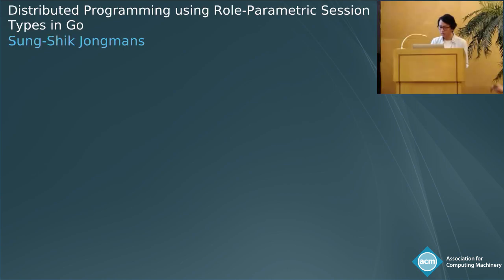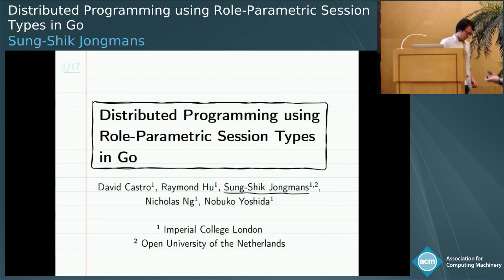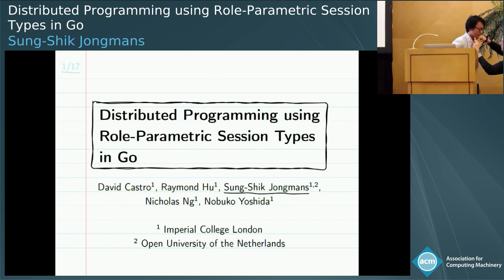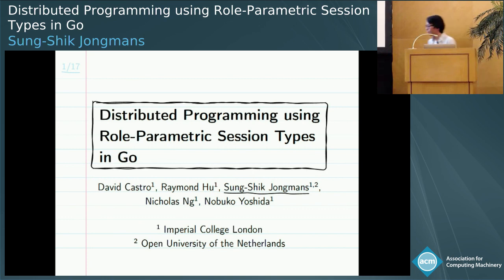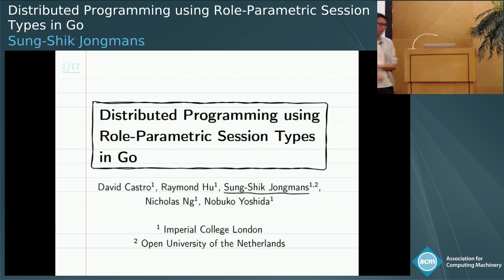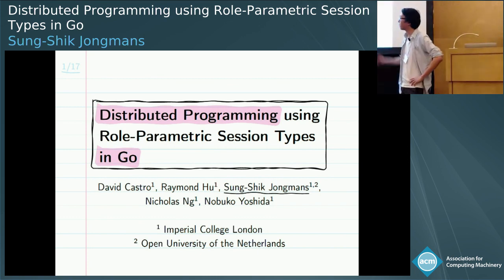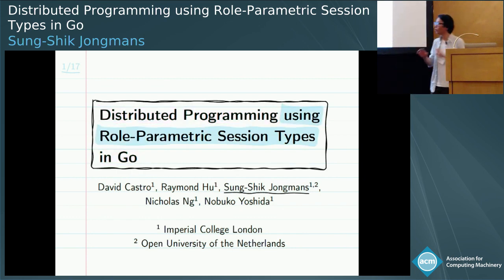Our second talk in this session is on distributed programming using role parametric session types in Go, with multiple authors. The speaker is Sun. I'm going to talk about distributed programming using role parametric session types in Go. The first half of the talk covers issues that Go programmers face when developing distributed applications, and then I'll explain how role parametric session types, the key contribution of this work, can help them.